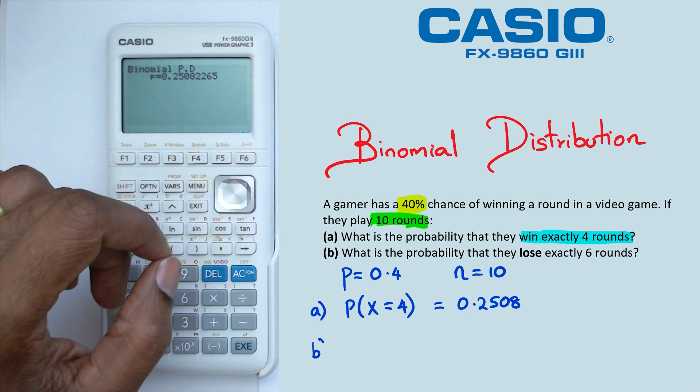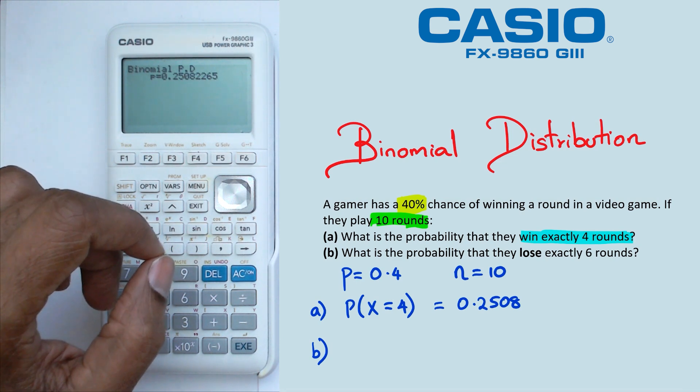However, the important part that we need to remember is that the probability of winning is 0.4. So we kind of need to figure out what the probability of losing is first.